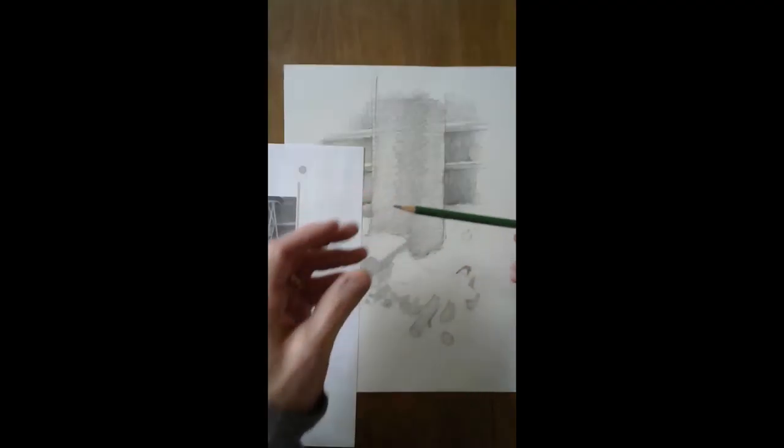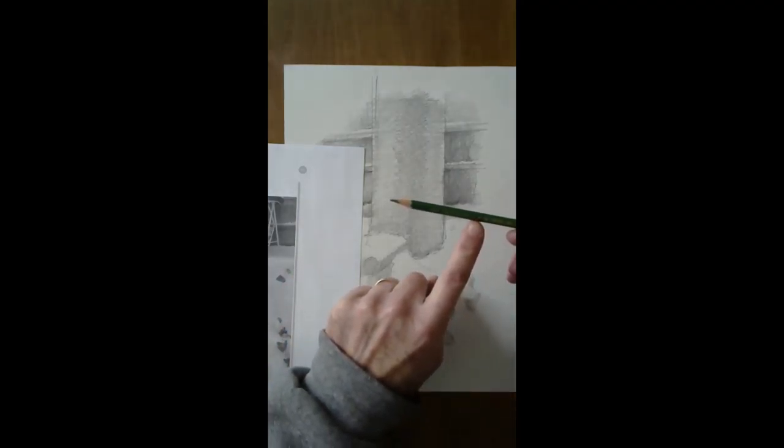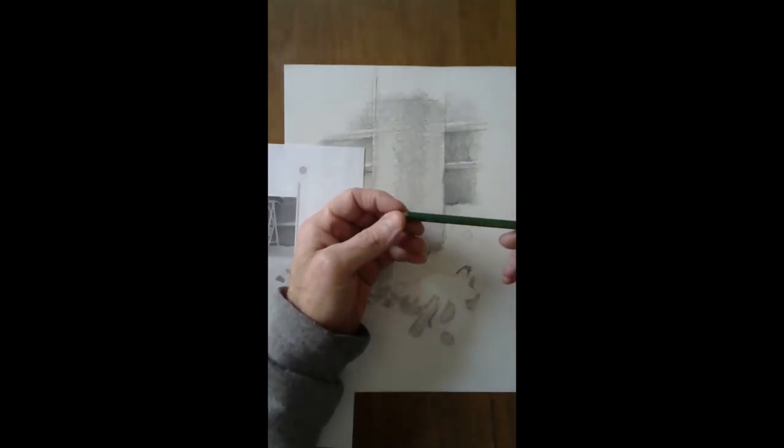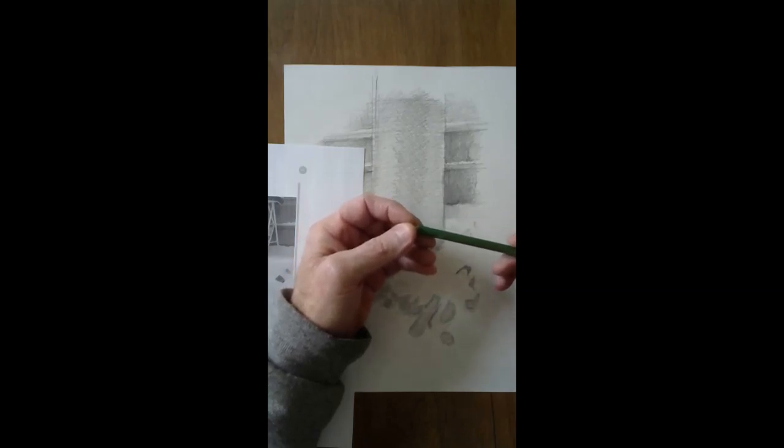Now I'm going to switch to using this, this is a 6B pencil, or you can still use a number 2 pencil, but this is going to be really dark. And I'm going to go lightly with it and then darken as I go along.